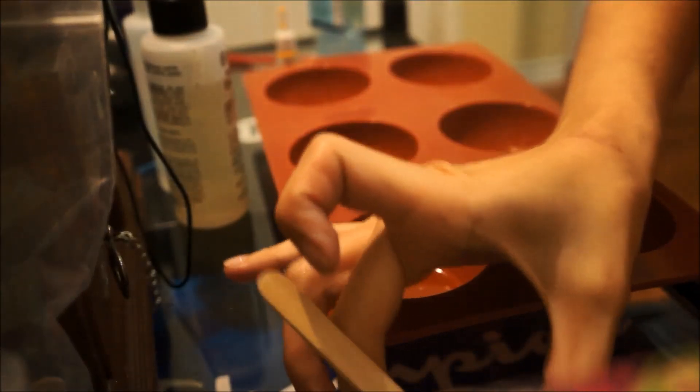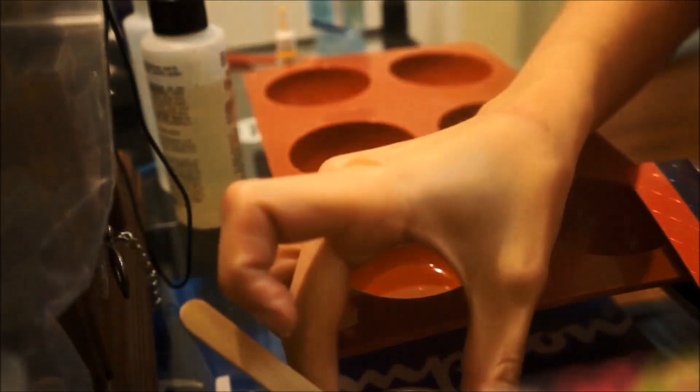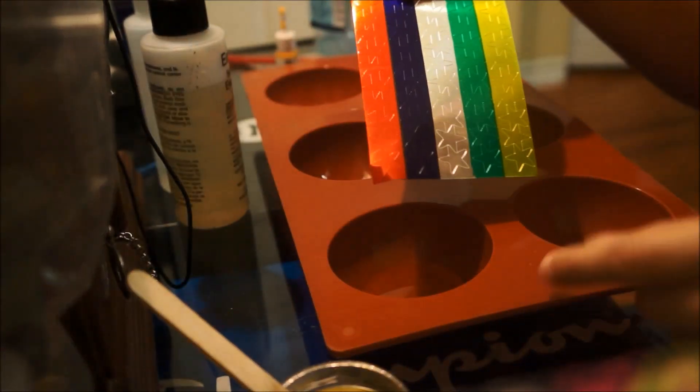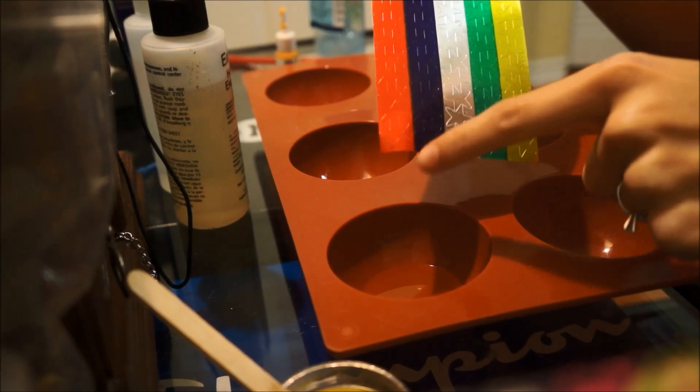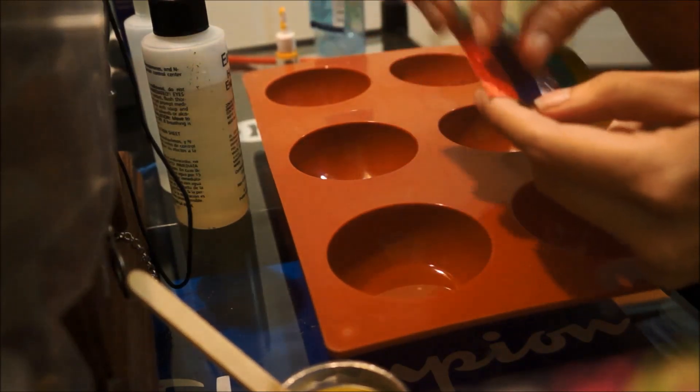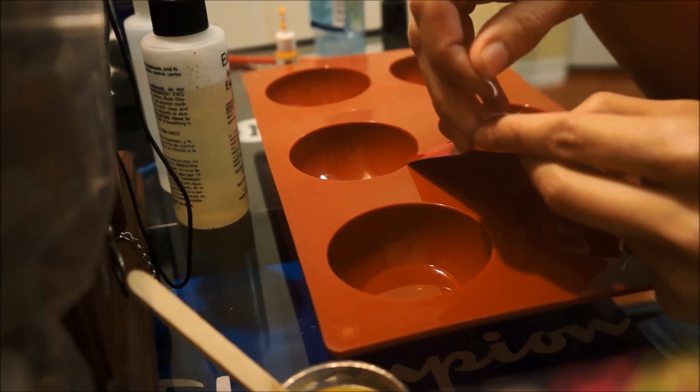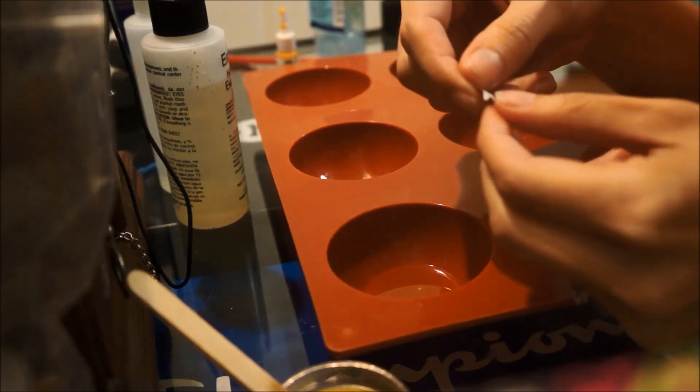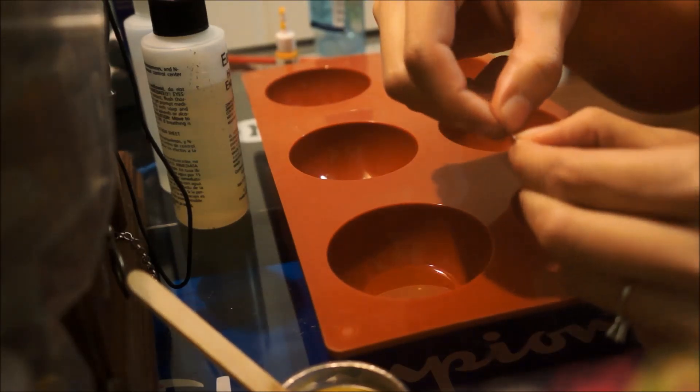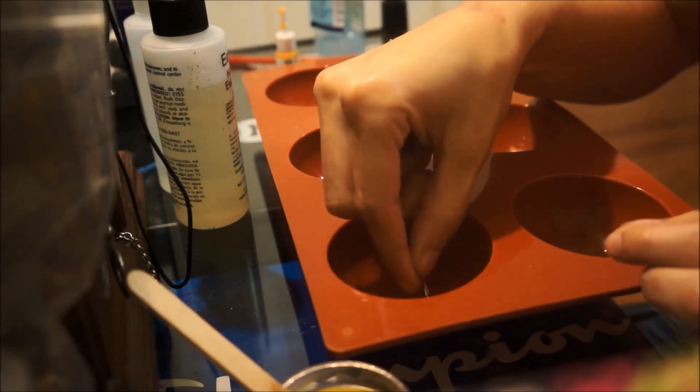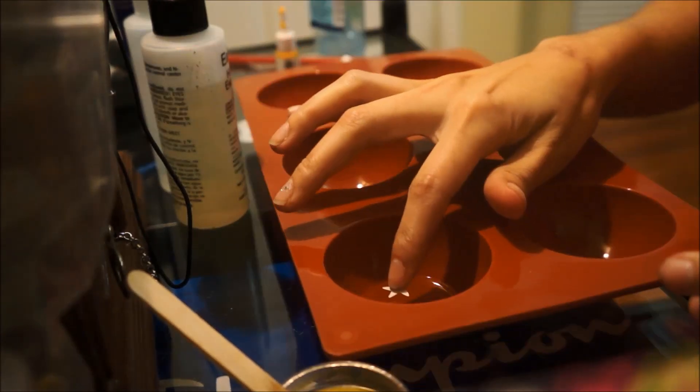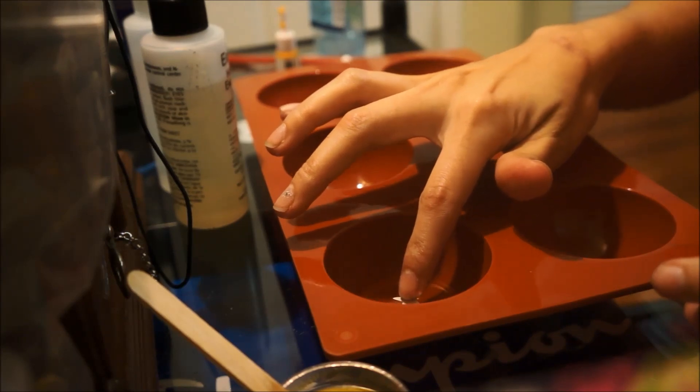Okay, once our resin is fully mixed, before we pour we're going to put these stickers on here. Now we're going to want to put them upside down, so the red part is facing down the tip of the dragon ball. So I just peel them off and just place them face down, just like so, however we want them.